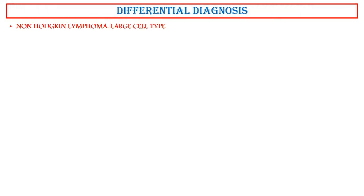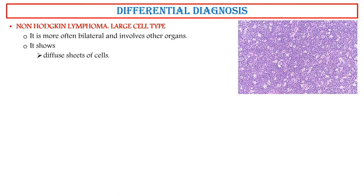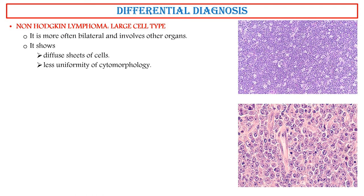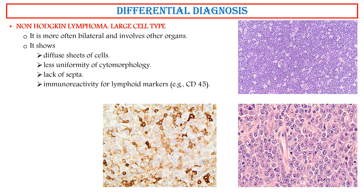Non-Hodgkin lymphoma, large cell type. It is more often bilateral and involves other organs. It shows diffuse sheets of cells, less uniformity of cytomorphology, lack of septa, and immunoreactivity for lymphoid markers such as CD45. It is negative for OCT3/4, CD117 (c-kit), and SALL4.